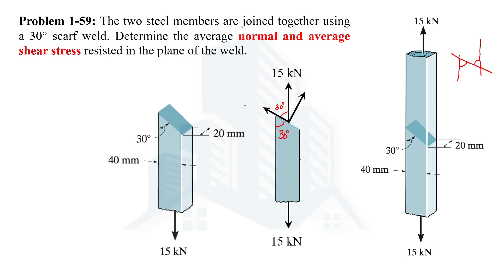This 30 degree angle is made with the component, so the formula to determine the component of the 15 kilonewton force parallel to the plane will be 15 cos 30°, and the perpendicular component will be 15 sin 30°. The shear force V = 15 cos 30° = 12.99 kilonewtons, and since this is the normal force we represent it as N = 15 sin 30° = 7.5 kilonewtons.